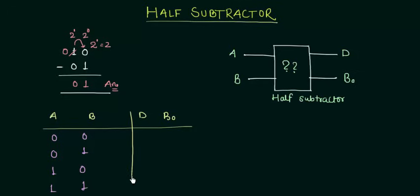Now we will use this concept to find out our borrow and the difference. So 0 minus 0 is your 0 and the borrow output will be 0. 0 minus 1. Again you are trying to subtract 1 from the 0. So you need to take out the borrow. So the difference is going to be 1 and the borrow is also going to be 1.